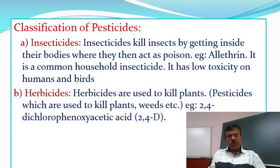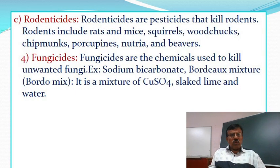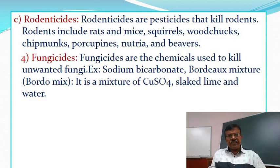Herbicides are used to kill plants, weeds, etc. Example: 2,4-dichlorophenoxyacetic acid. Rodenticides are pesticides that control rodents. Rodents include rats and mice, squirrels, woodchucks, chipmunks, porcupines, nutria and beavers. Fungicides are chemicals used to kill unwanted fungi. Examples: sodium bicarbonate, Bordeaux mixture, etc.